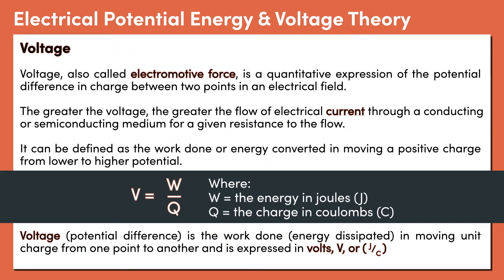Voltage, also called electromotive force, is a quantitative expression of the potential difference in charge between two points in an electric field. The greater the voltage, the greater the flow of electrical current — that is, the quantity of charge carriers that pass a fixed point per unit of time through a conducting or semiconducting medium, for a given resistance to the flow. Voltage is the work done in moving unit charge from one point to another and is expressed in volts, or joules per coulomb. The expression displayed shows the relationship between the work done, or energy dissipated, and the charge in coulombs.